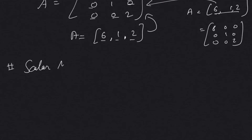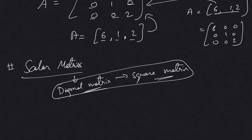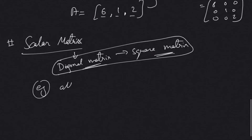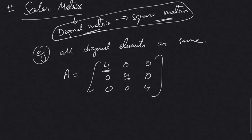Next we have a scalar matrix. A scalar matrix is a diagonal matrix — which also means it is a square matrix — but the special condition is that all diagonal elements are the same, unlike a general diagonal matrix. For example, a matrix A where all diagonal elements are 4: that is 4, 0, 0, 0, 4, 0, 0, 0, 4. All diagonal elements are the same, so this is called a scalar matrix.